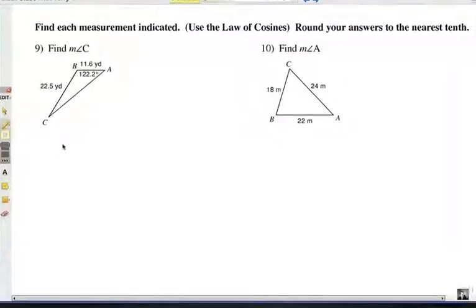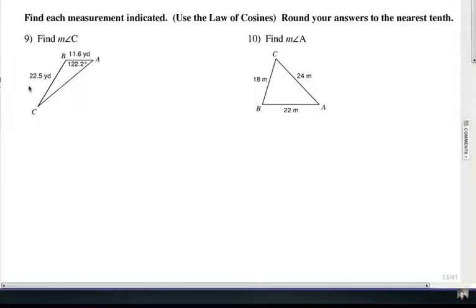Now I'm going to show you two examples of how to use the law of cosines. In this first one, number nine, it's side, angle, side. You're given this side here, 22.5 yards, and you're given this side here, 11.6 yards, and you're also given this included angle, angle B. Now, let's go ahead and see how we're going to set this up.